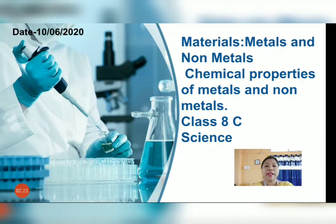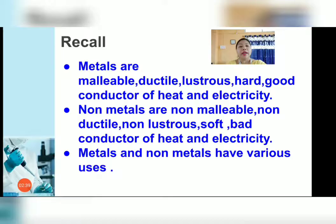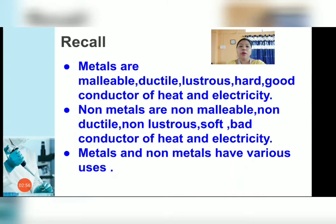Before we begin, let us recall what we did in the previous class. In the previous class you learned about the physical properties of metals and non-metals. The physical properties of metals are that metals are malleable, ductile, lustrous, hard, and good conductors of heat and electricity. On the other hand, non-metals are non-malleable, non-ductile, non-lustrous, soft and bad conductors of heat and electricity. Metals and non-metals have various uses, and we also discussed the different uses depending on the properties of metals and non-metals.